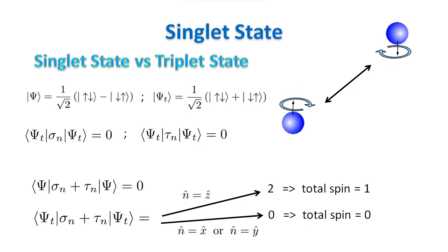For the triplet state, we get zero along the x and y-axis and two along the z-axis. If we reintroduce the one-half h-bar factor in measurement from the S matrices, we get a total spin along the z-axis of one. The triplet state is not invariant under rotations.